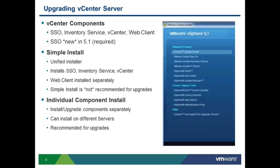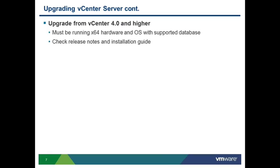If you're going to do a more custom and certainly a staged upgrade approach, then the individual component install is the best way to do it — you've got greater control over where you start, where you stop. First thing is to read the release notes and check the install guide. There's a lot of documentation that VMware makes available and it's the best source for creating yourself that checklist, especially if you're doing a large or complex environment.